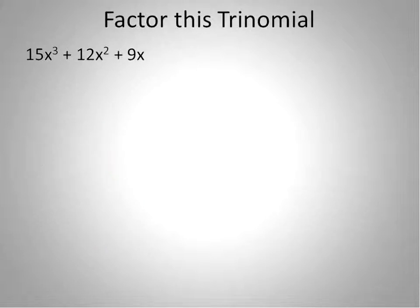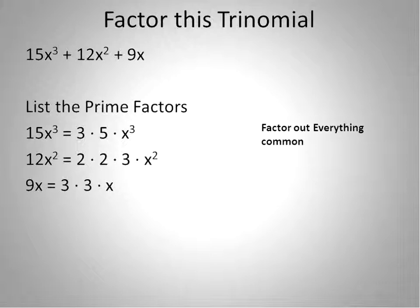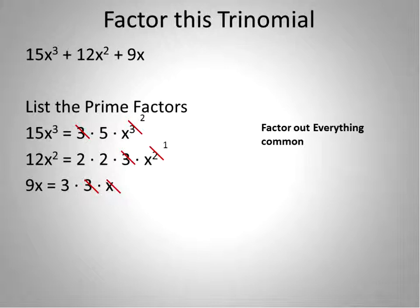Let's factor one more: 15x to the power of 3 plus 12x squared plus 9x. Follow exactly the same steps — list the prime factors of each term and factor out everything common between them. The first term has a 3, a 5, and x to the power of 3. The second has a 2, a 2, a 3, and x squared. The third has two 3s and an x. The only number in common is 3, and we can factor out one x from each term. So our greatest common factor is 3x.